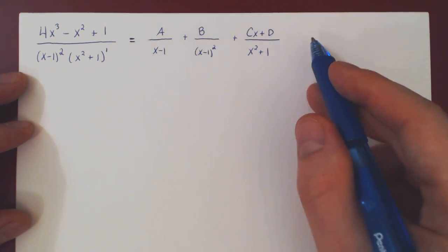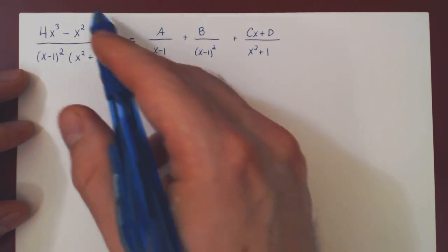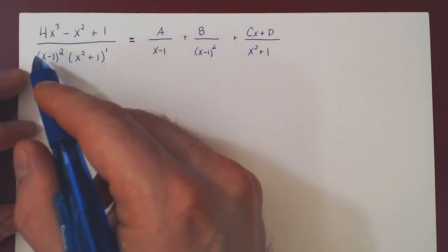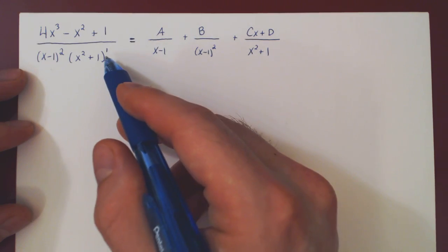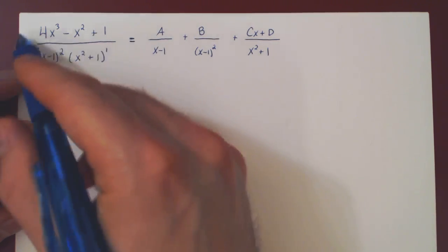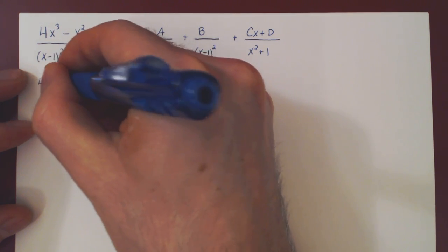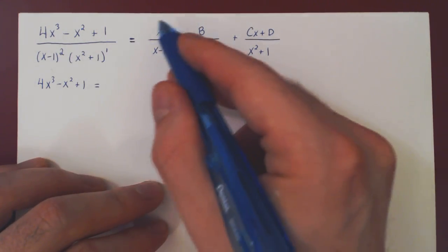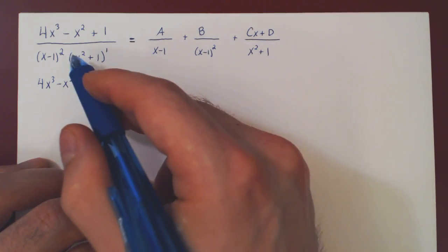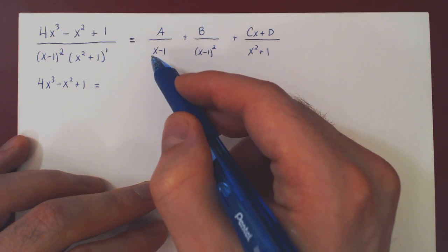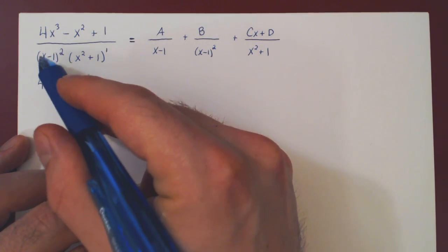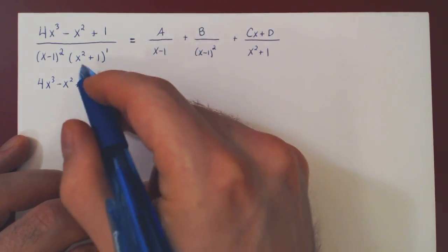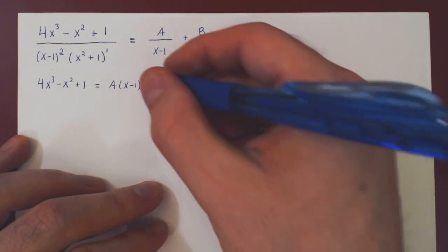Now we want to solve for the coefficients. As in our previous video, we want to go from an equality between rational functions to an equality between polynomials. We multiply both sides by the denominator. On the left we're left with the numerator: 4x cubed minus x squared plus 1. On the right, we multiply each partial fraction by the denominator. So a over x minus 1 times the denominator gives x minus 1 squared over x minus 1, which simplifies to a single x minus 1, times x squared plus 1.